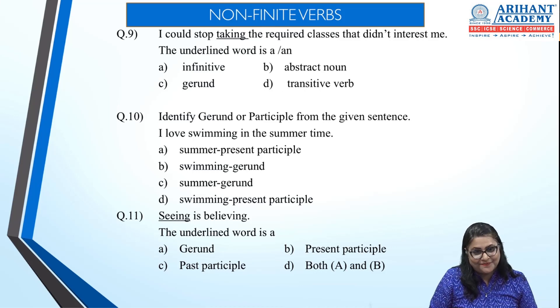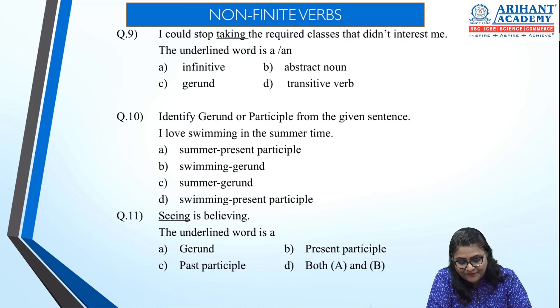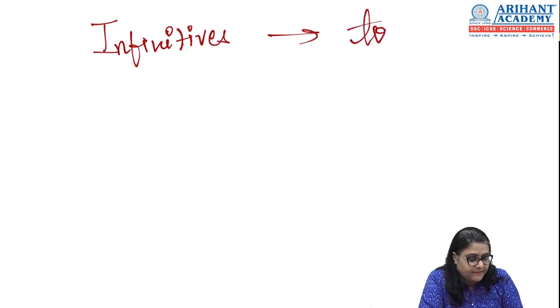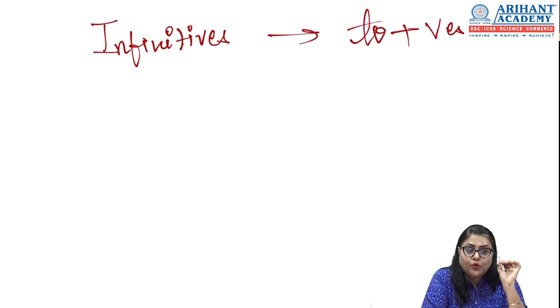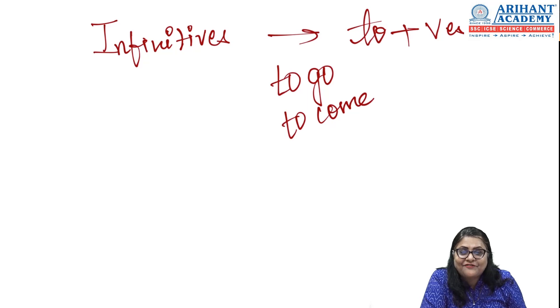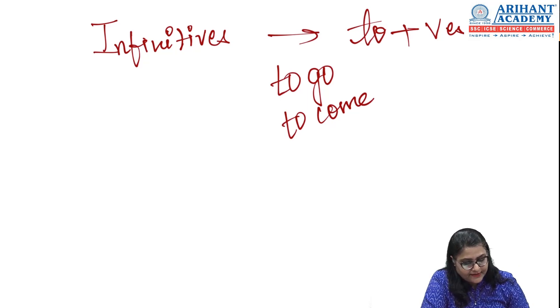Now let's go to the next topic: non-finite words. There are three types of non-finite verbs. The first is an infinitive — 'to' plus verb. Before any verb, if you add 'to', it becomes an infinitive. For example: to go, to come, to run, to dance — all these are infinitives. They are very easy to find in a sentence.